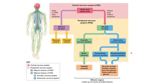Focusing on the efferent division of our peripheral nervous system, we have two subdivisions: the somatic and the autonomic. The somatic nervous system deals with motor neurons and skeletal muscles — think voluntary movement. The autonomic nervous system — think 'automatic' — is all involuntary. It branches into the sympathetic nervous system, our fight-or-flight system, and the parasympathetic nervous system, our rest-and-digest system.